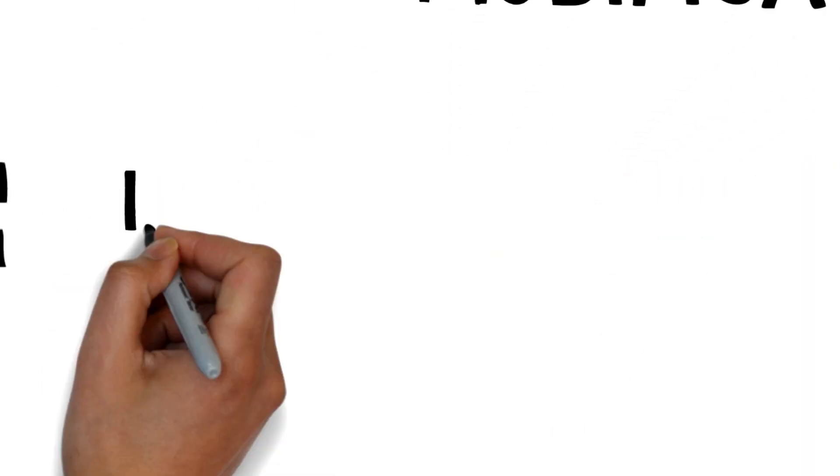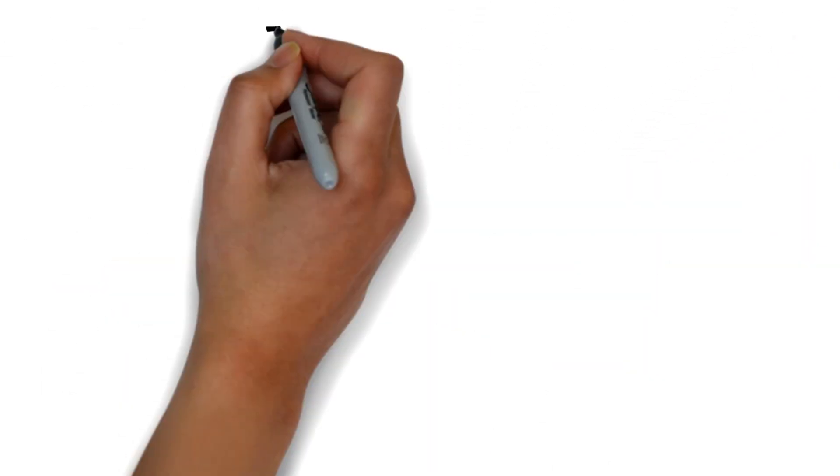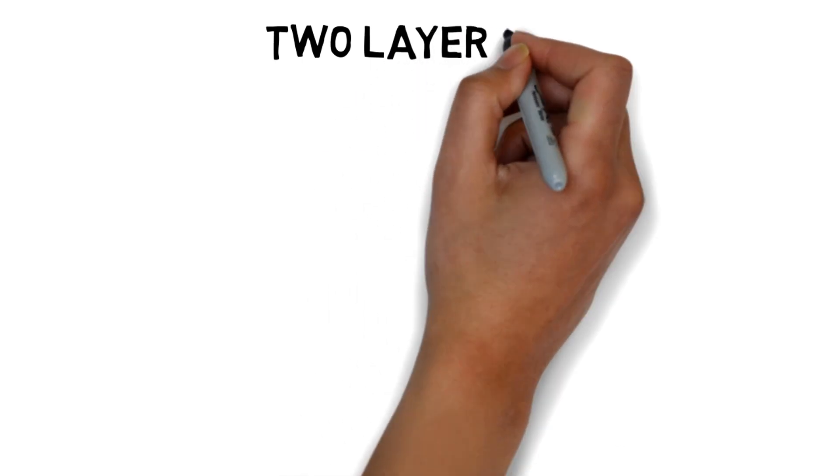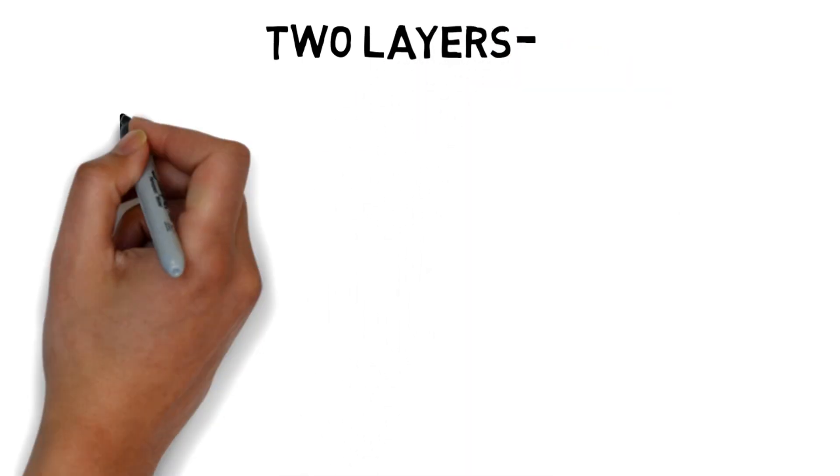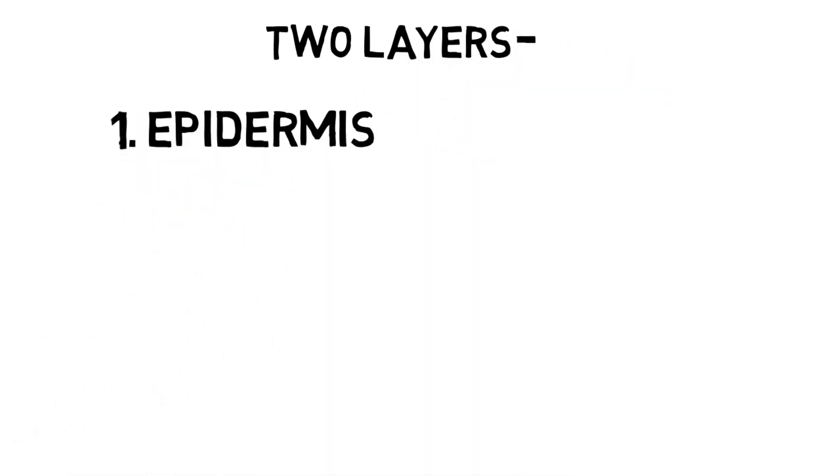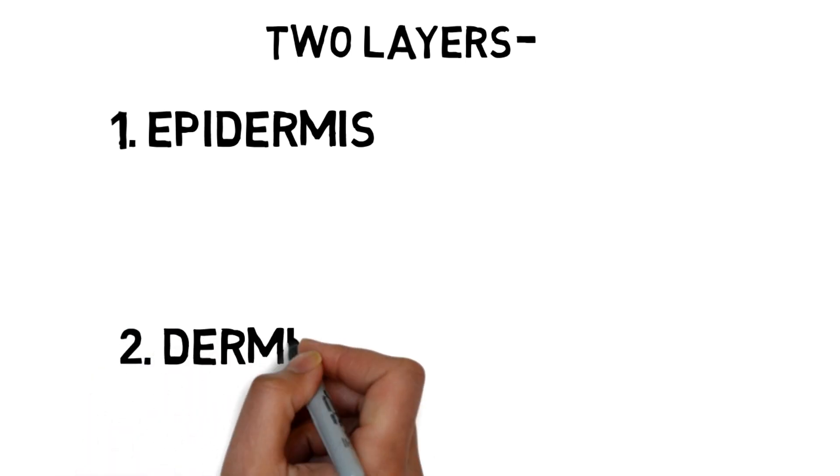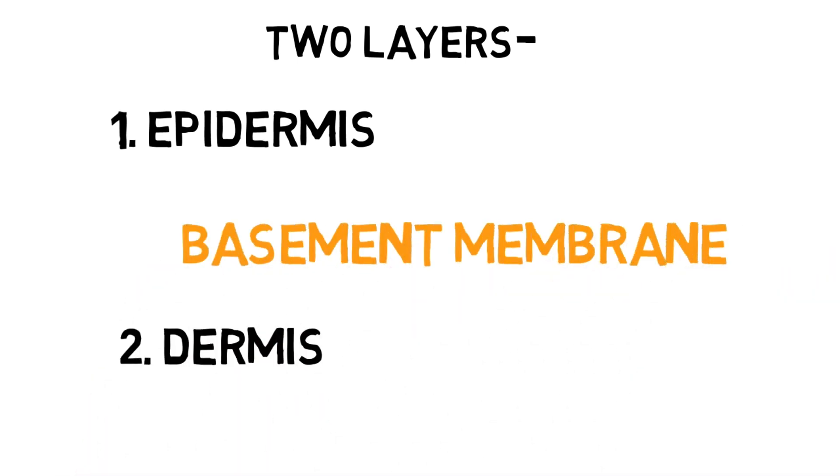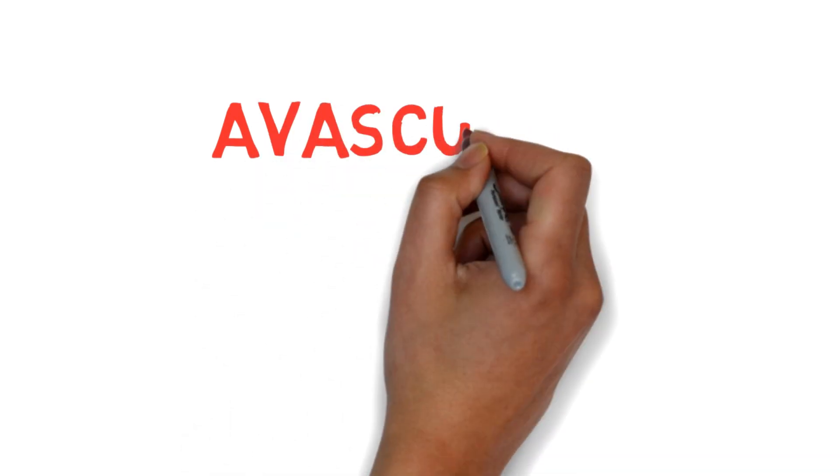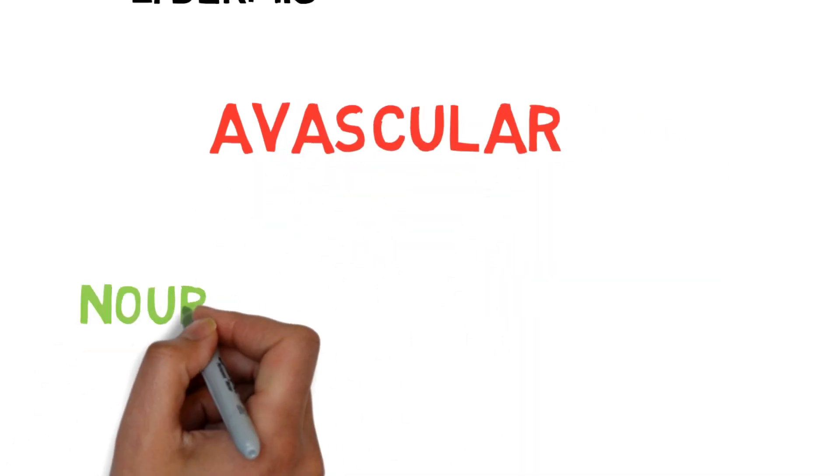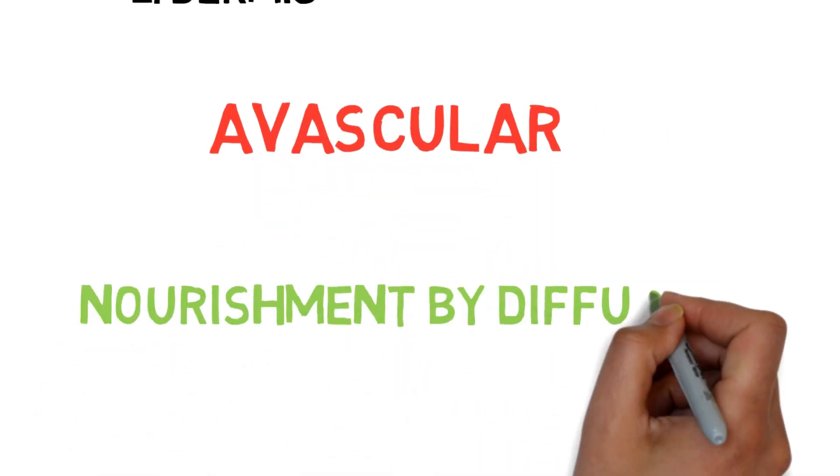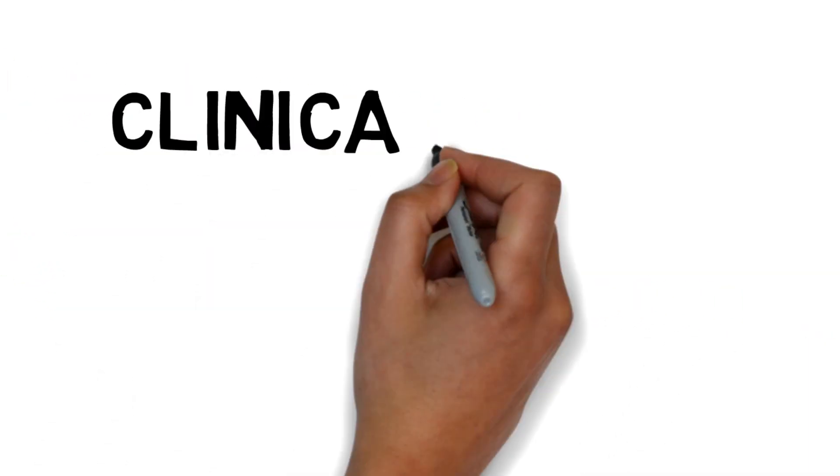The skin consists of two layers: epidermis and dermis. Both layers are separated by a basement membrane. From your histology classes you know that skin is avascular and is nourished by diffusion from capillaries of the dermis.